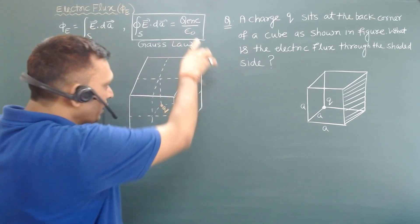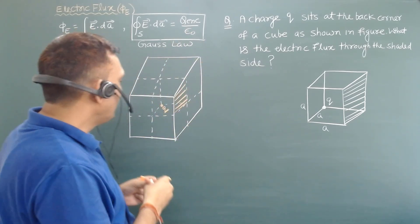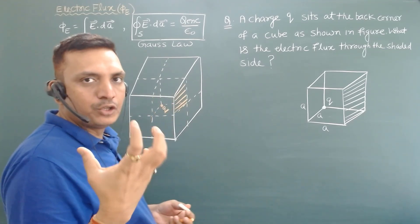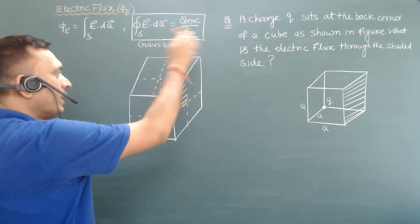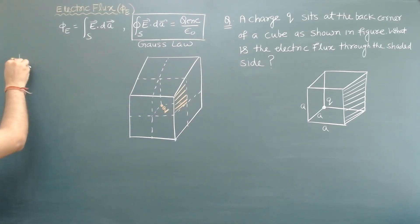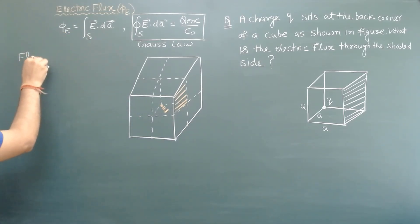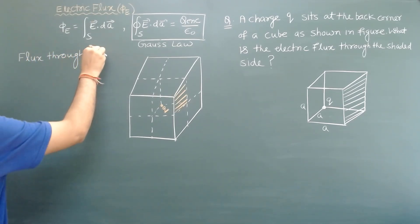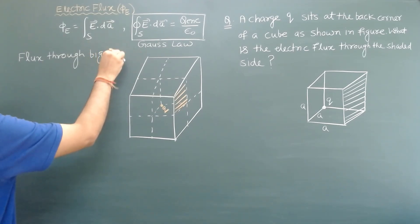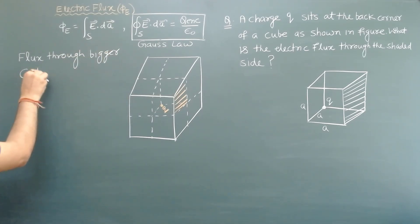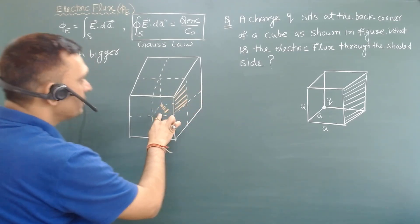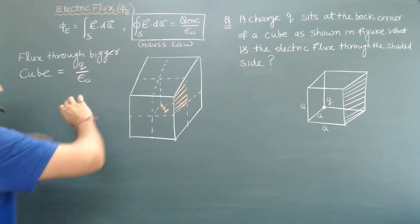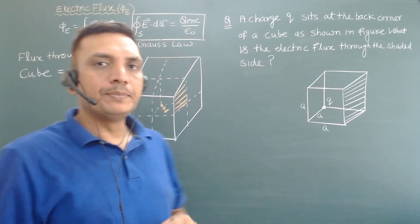With charge q at the center of the bigger cube, what will be the flux through the bigger cube? Since the bigger cube is a closed surface and the total charge inside is q, the flux through the bigger cube is given by q divided by epsilon naught.